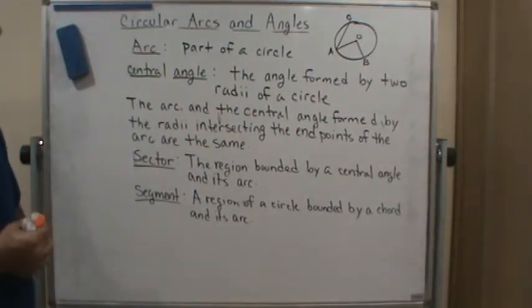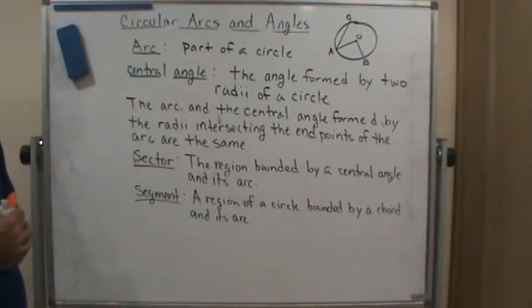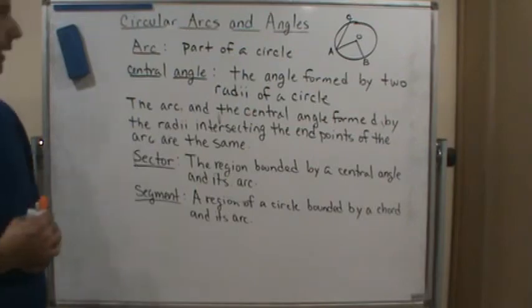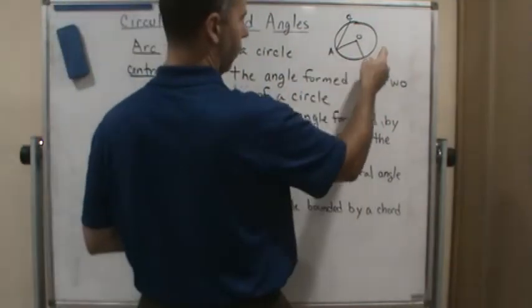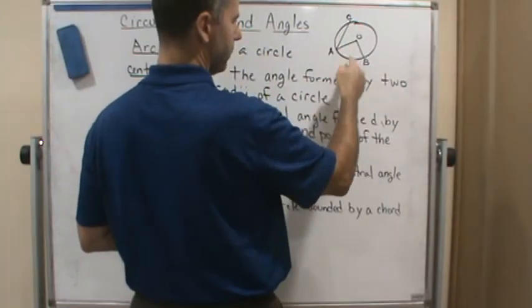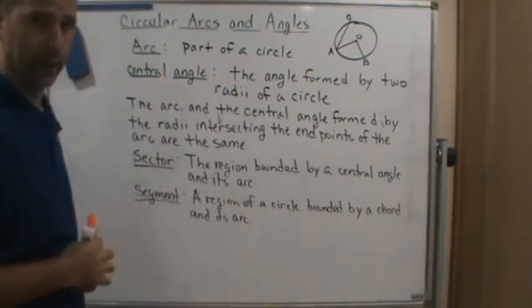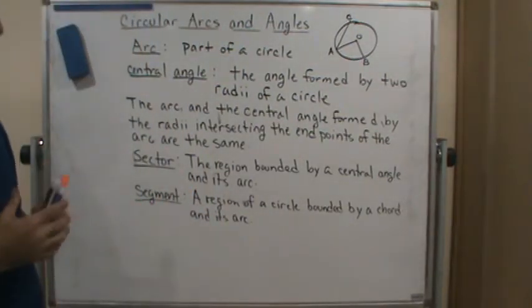An arc is just part of a circle. In particular, if we take the circle, any part of the circle would be an arc, and we could talk about the measure of that arc.